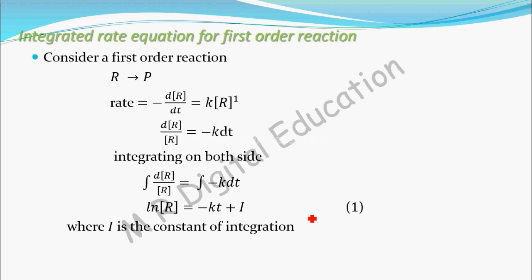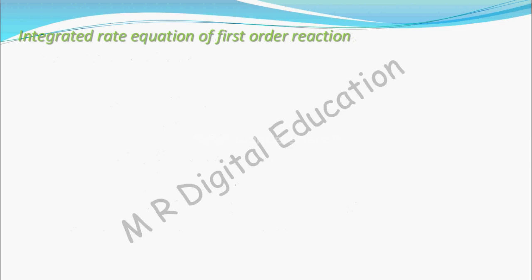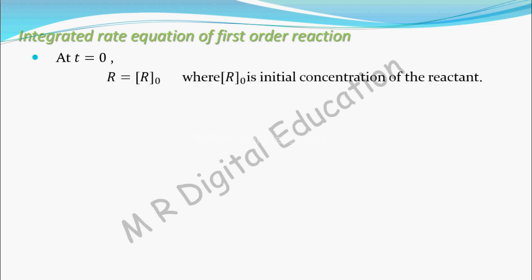Call this equation 1. Now in this equation you have to find the value of I. To do that, apply the boundary condition: at the beginning of the reaction, at time t equal to 0, the concentration of reactant R will be R naught, which is the initial concentration of the reactant. Substitute t equal to 0 and R equal to R naught into equation 1.